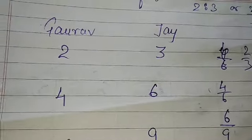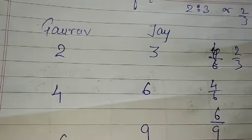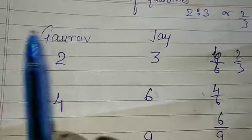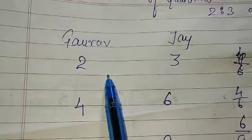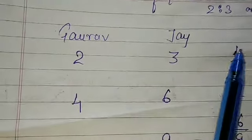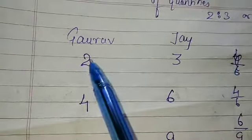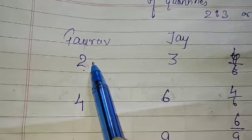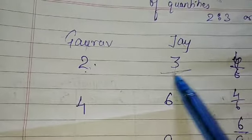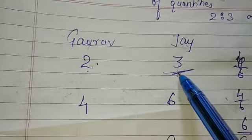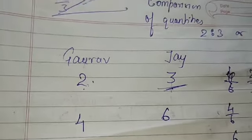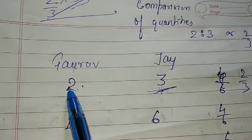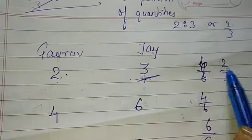Suppose two boys are there, Gaurav and Jay. We will understand the concept of ratio via example. Two boys are there and they are not doing work daily, so they are getting punishment. Punishment they are getting, it means two stick Gaurav is having and three that Jay is having. So the ratio of Gaurav and Jay, that is two by three.